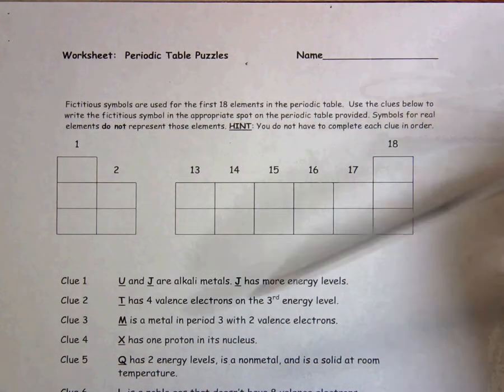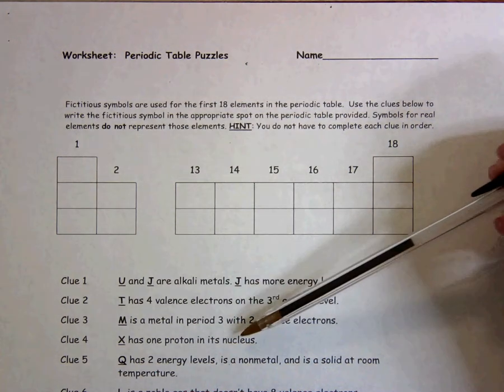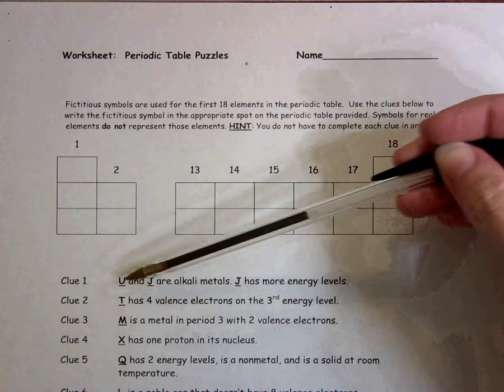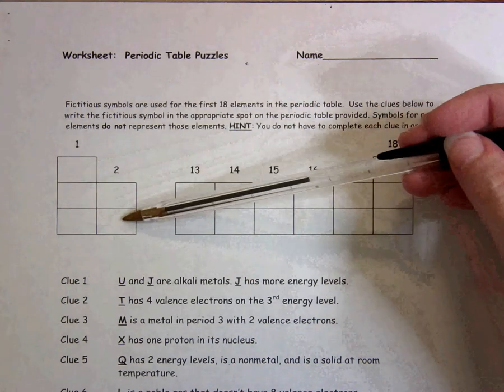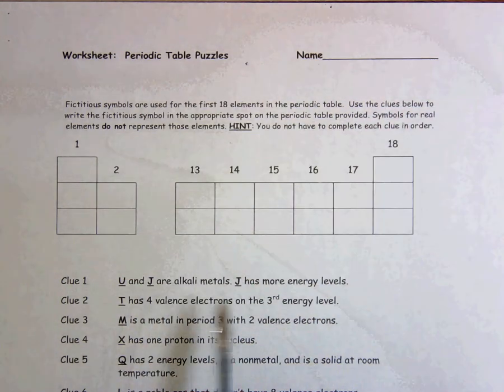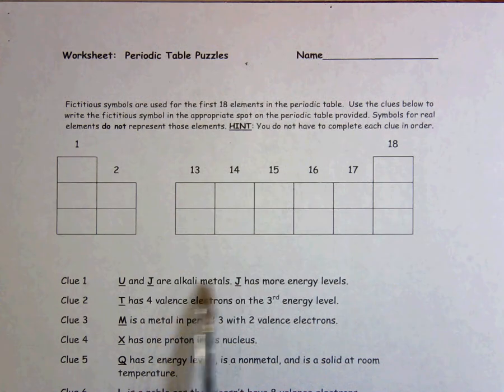You're going to use these clues below to figure out which of these letters go in each box. Look at the labels for what group it's in and how many energy levels it has. Don't forget...